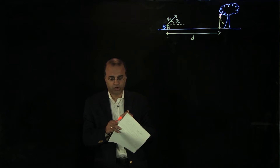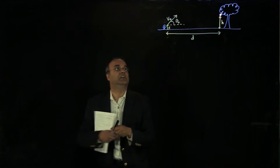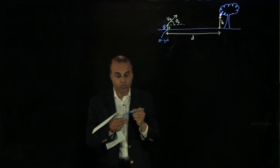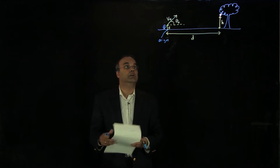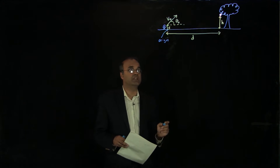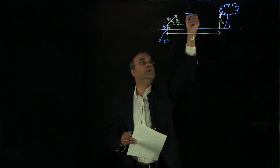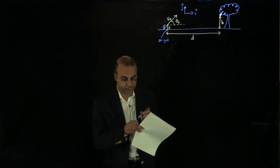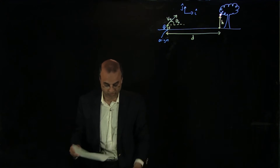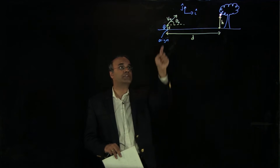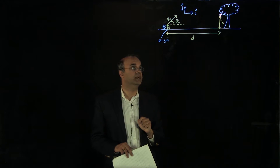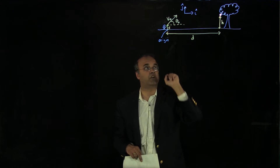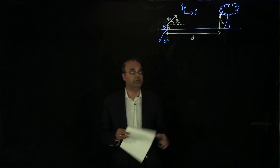We define our origin to be on the ground directly below where the projectile begins. The i-hat direction is horizontally to the right, and the j-hat direction is vertically upward. The question is: what should our angle theta-naught be in order to hit the apple, which starts falling from the tree at the same instant that we fire our projectile, and we want to hit the apple before it hits the ground?